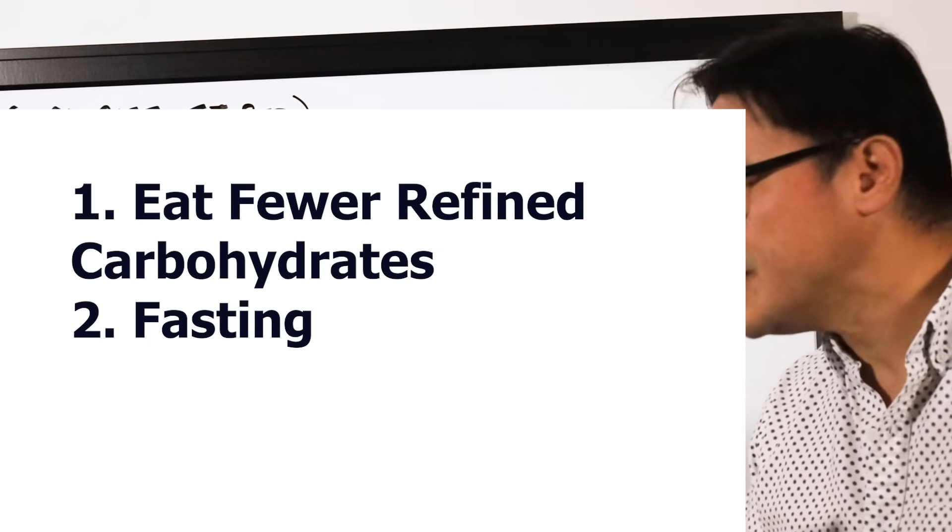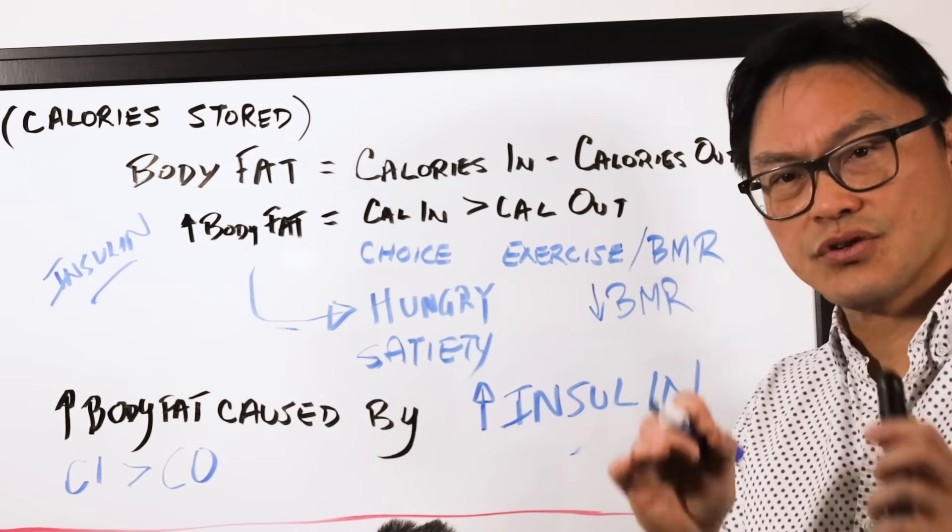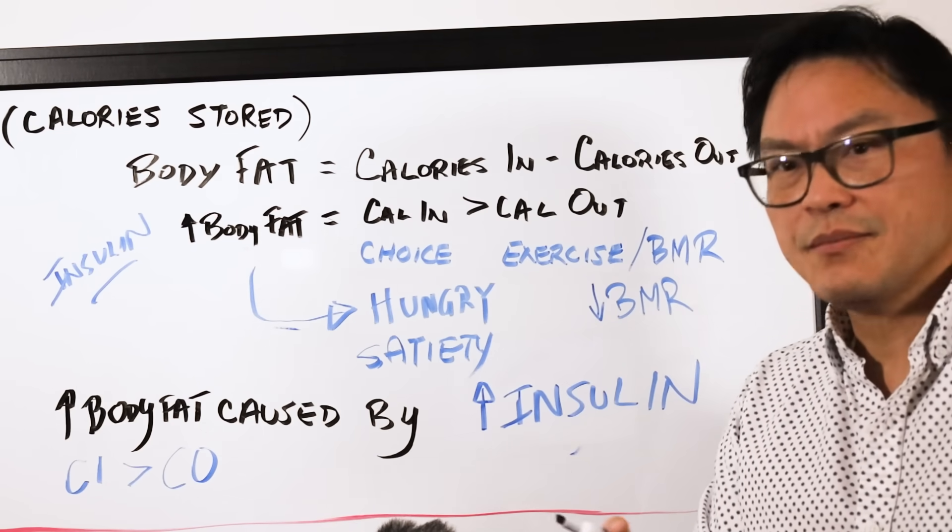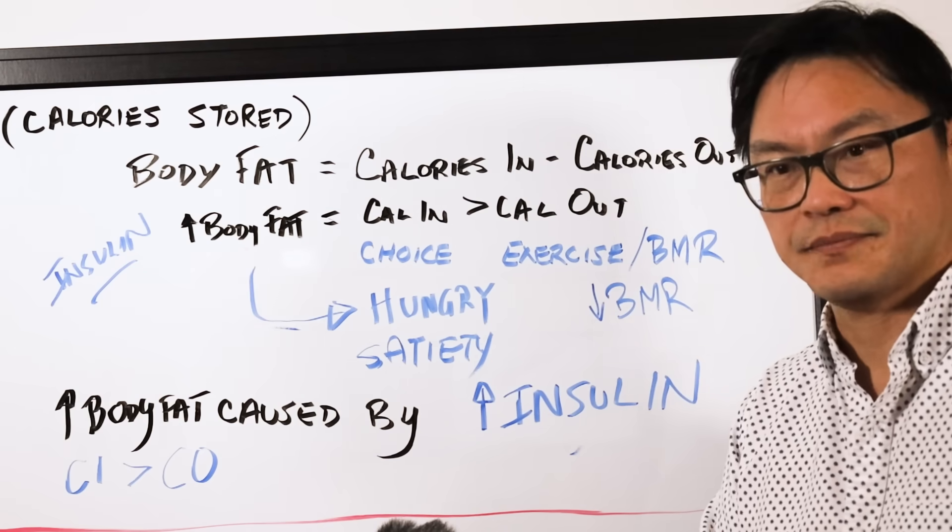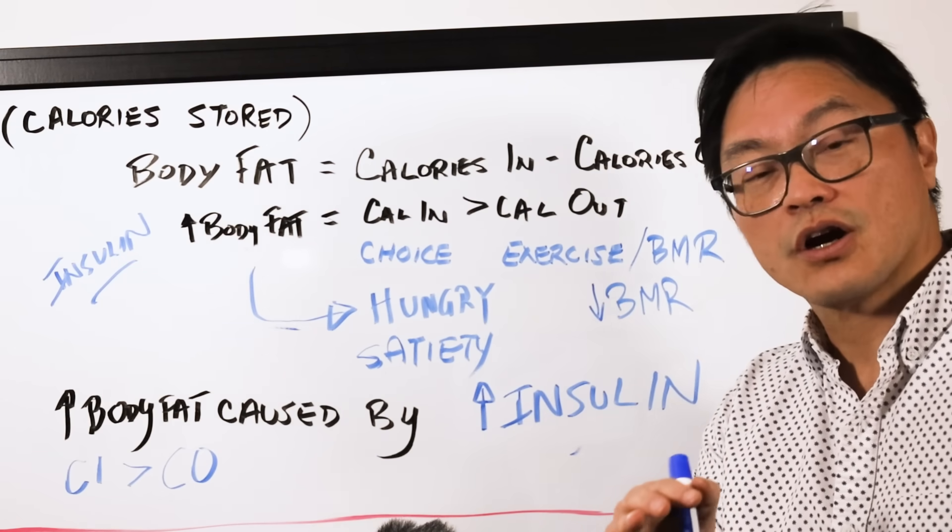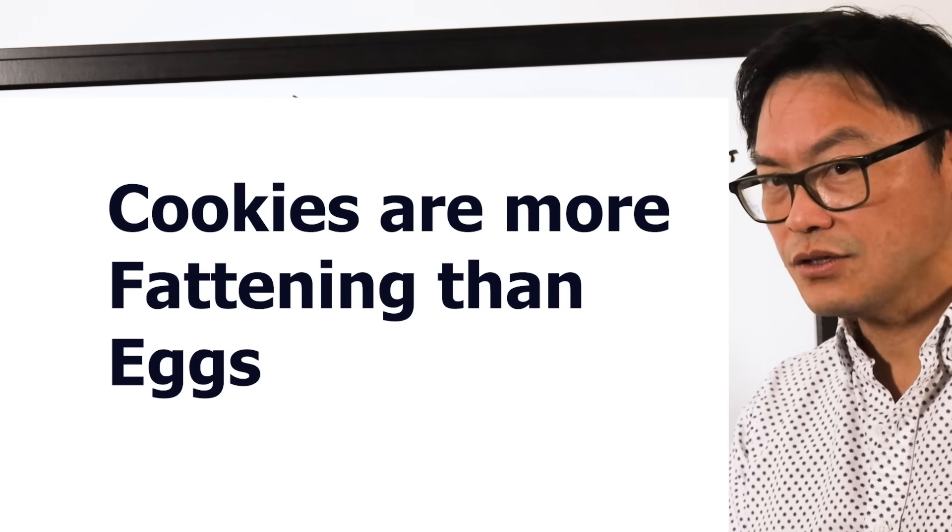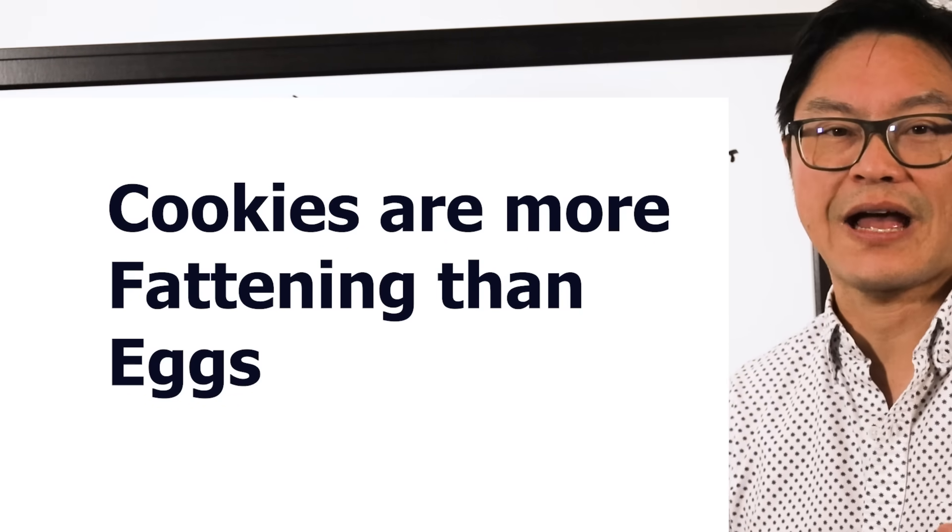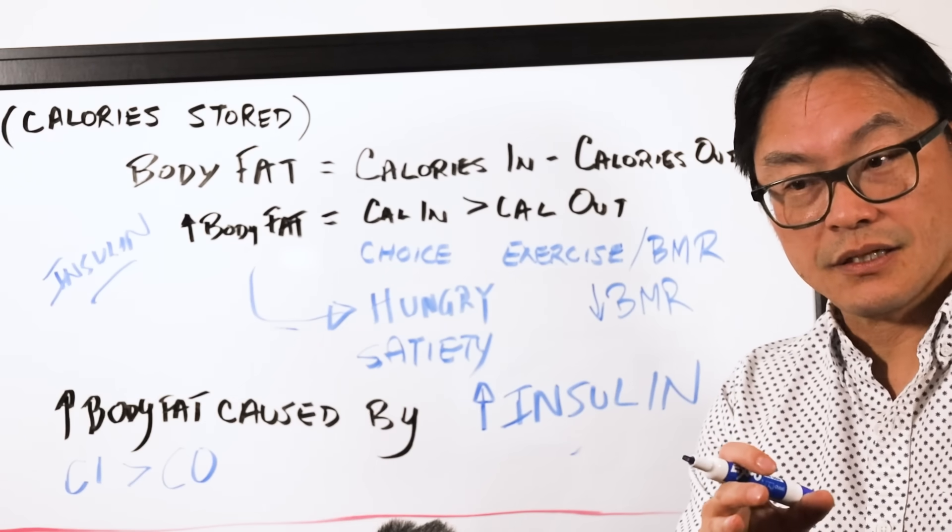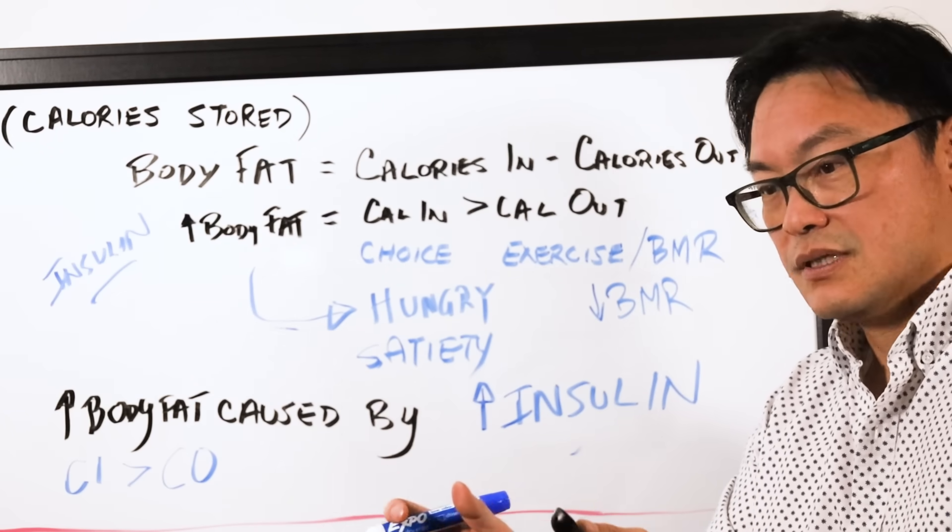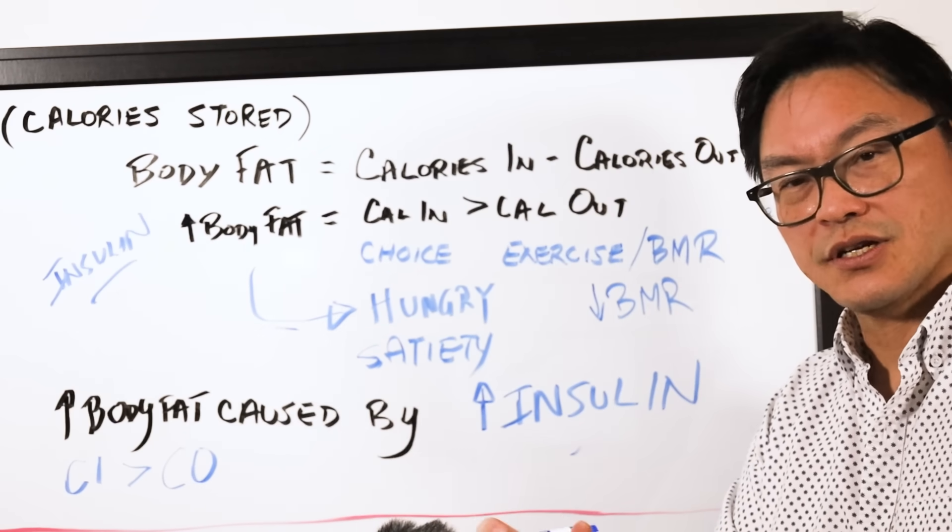And what does this mean practically? It simply tells you that certain foods for the same amount of calories are going to stimulate different amounts of insulin. Cookies are going to stimulate more insulin than an egg. So it tells you that cookies are more fattening than eggs. Brownies stimulate more insulin than spinach. So therefore, brownies are more fattening than spinach.